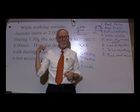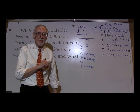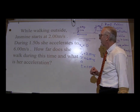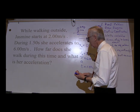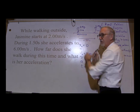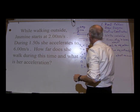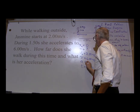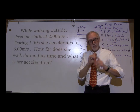Let's go to the equations. Before we go on to the equations, what are we looking for? How far does she walk during this time — that will be her final position, her value for X. So we're looking for X. And then what is her acceleration? So we are looking for X and A. Now let's go to the equations.